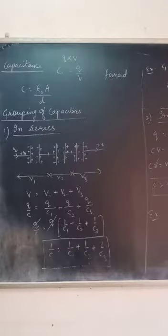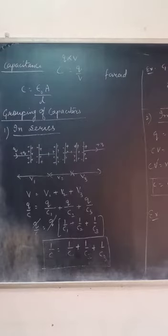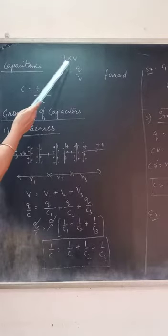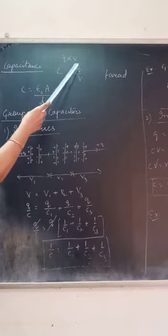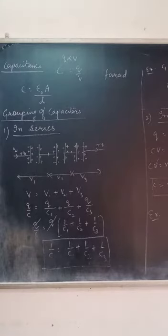In the previous lecture, I told you how to change the capacity. I told you that if you increase the body of charge, you will automatically raise the potential. The constant is C — C is called capacitance, or electrical capacitance.